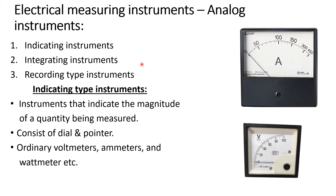Hello friends, now we are going to see some electrical measuring instruments. Electrical measuring instruments are very important and necessary to measure readings. We will discuss about analog electrical instruments mainly. Analog electrical instruments can be of three types: indicating instruments, integrating instruments, and recording type instruments. We will discuss each instrument one by one.